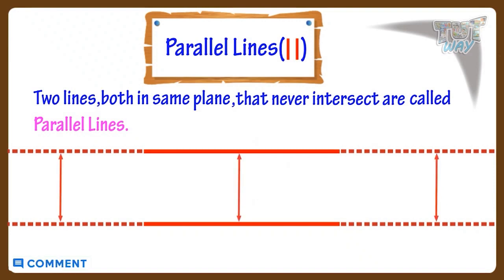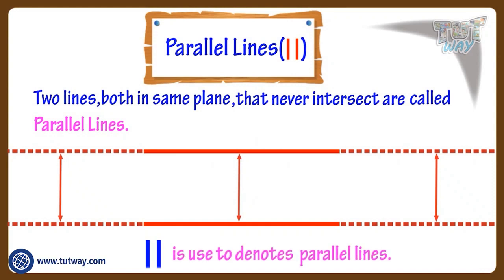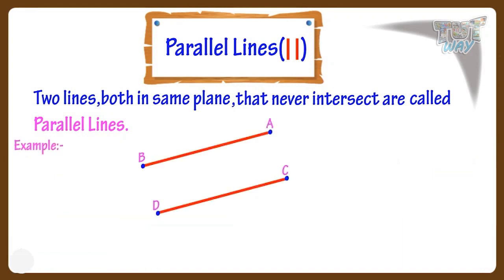This symbol is used to denote parallel lines. Here the lines AB and CD are parallel to each other. We write it like this. Here this symbol denotes that these two lines are parallel to each other.